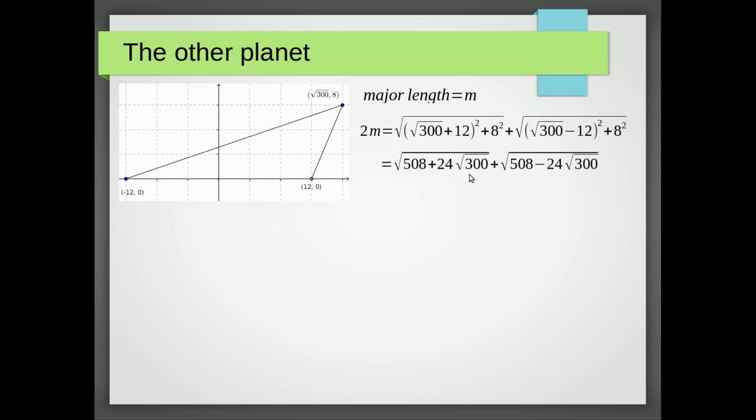So we're now going to square both sides and we're going to get obviously 4m². We're going to get this disappearing, this disappearing, and we'll have a positive √300 and a negative √300, so we just end up with two of these.